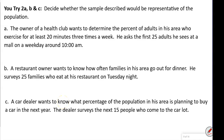You try: decide whether these samples are representative of the population or biased. First, the owner of a health club wants to know the percent of adults in his area who exercise at least 20 minutes three times a week. He asks the first 25 adults he sees at the mall on a weekend around 10 a.m. This is not representative — most adults are at work at 10 a.m., so only a select few would be at the mall.